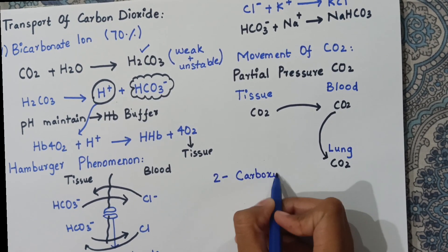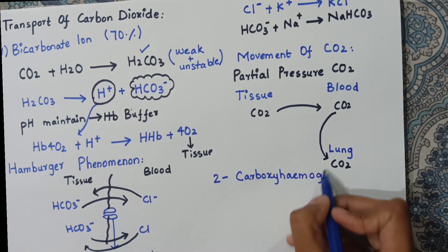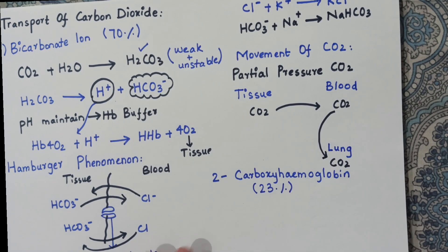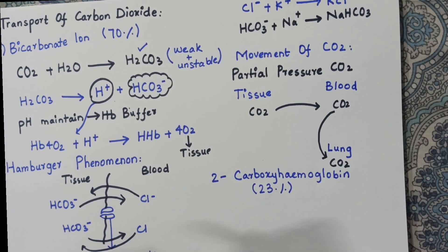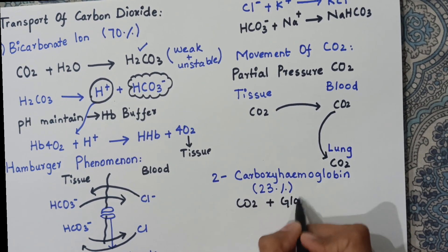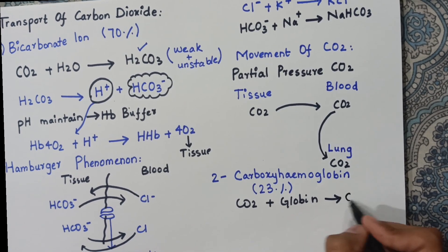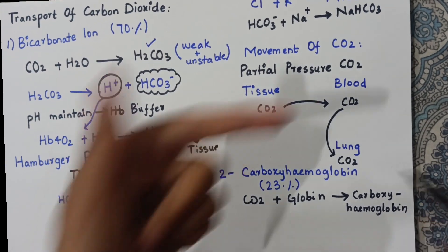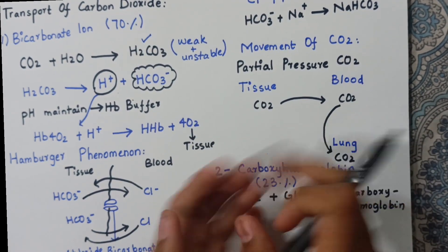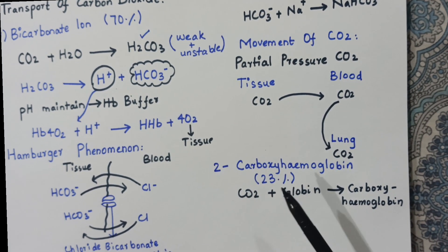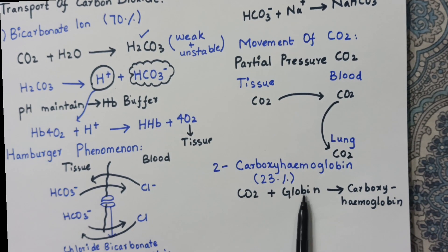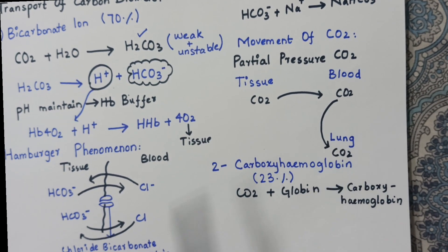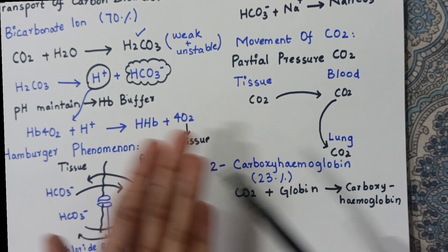The second method is carboxyhemoglobin. This is not as major — only 23% of carbon dioxide is transferred in this form. In this method, CO2 associates with the globin part of hemoglobin to form carboxyhemoglobin. This works similarly to oxyhemoglobin: when the blood reaches near the lungs, under the influence of partial pressure and carbonic anhydrase, carboxyhemoglobin breaks down, releasing CO2 and water back into the lungs.